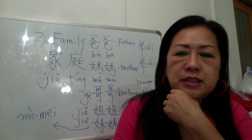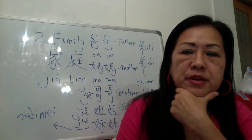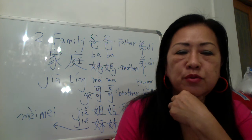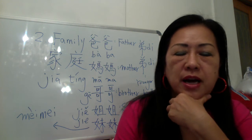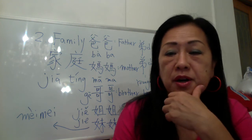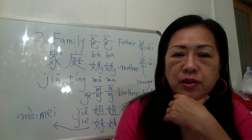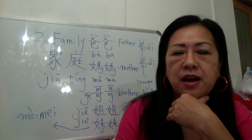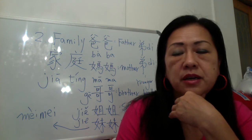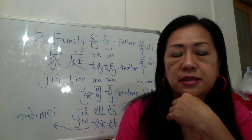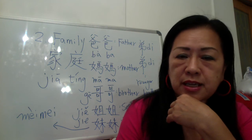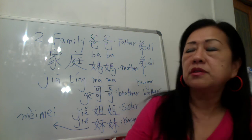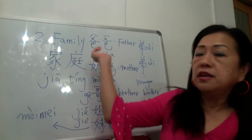I hope in our class I will ask you: how many members in your family? So you can answer me: 爸爸, 妈妈 — your parents — and your brother and sister. How do you say 哥哥, 姐姐, 弟弟, 妹妹? Here is the pinyin.